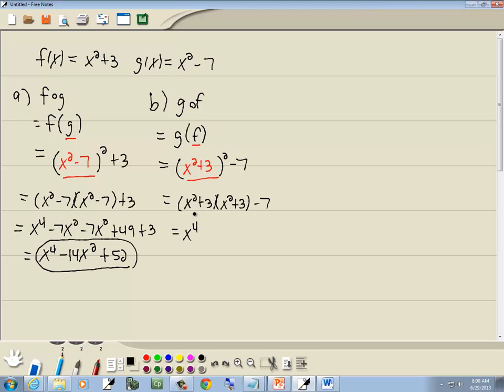x squared times x squared is x to the fourth. x squared times 3 is 3x squared. 3 times x squared is 3x squared. 3 times 3 is 9. I'm bringing down to minus 7, which gives us x to the fourth plus 6x squared. 9 minus 7 gives us 2.